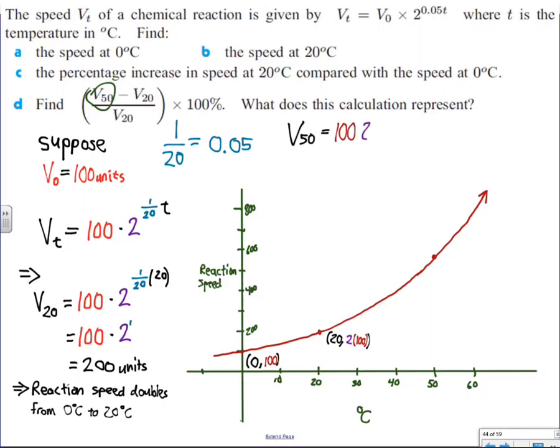So here's what I have to come up with then. So v of 50 is something I'm going to have to know, A, to get the graph looking good, and B, because I'm going to need to know it for part D. So to find v of 50, I just take 50 times 1/20, which simplifies to 5/2. So v of 50 in this case is 100 times 2 to the 5/2 power, which is 565.7 units of speed.